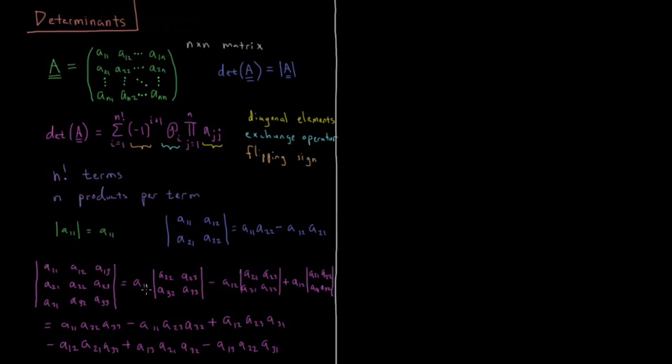So you can do this by another method called cofactor expansion, where we take this number times the determinant of this, this number times the determinant of this, this number times the determinant of this, as I have written out here.